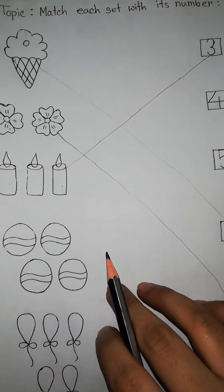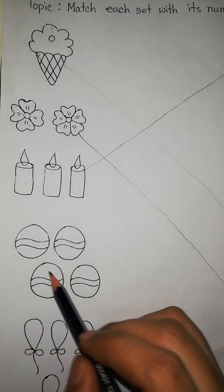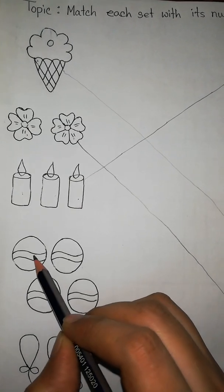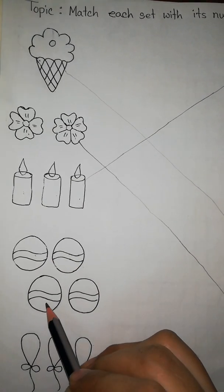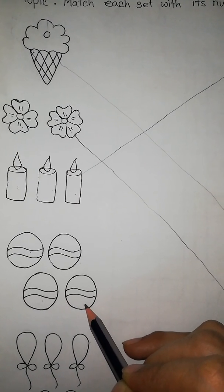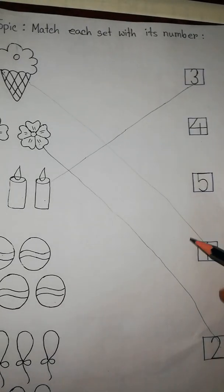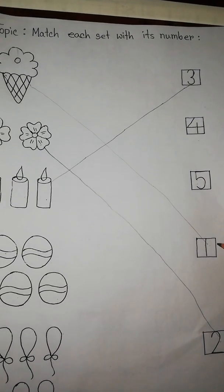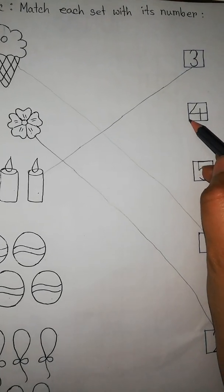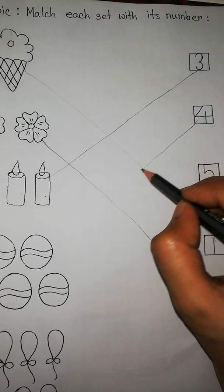There are some balls. How many balls are there? 1, 2, 3, 4. There are 4 balls. So we match the number with 4. Is it 4? No. Is it 4? No. Is it 4? Yes. So we match the balls with number 4.